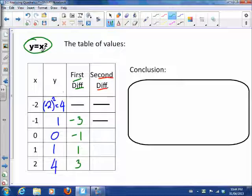So that tells us that this relationship right here is not linear. So you should have learned last year that if the first differences are the same, we get a relationship that's linear. So that's not happening.